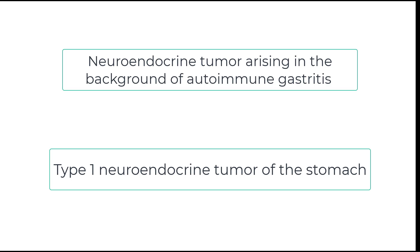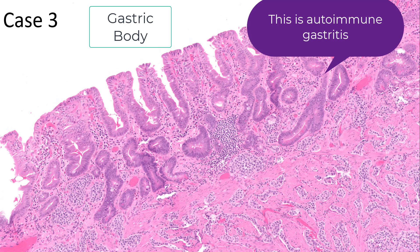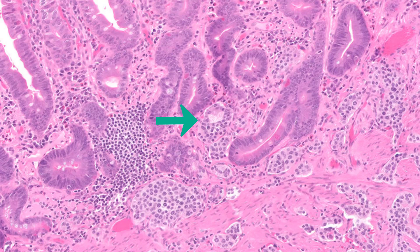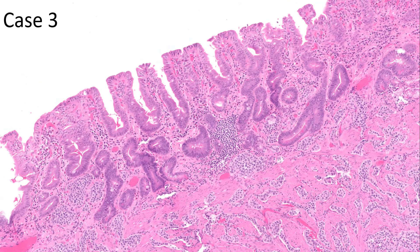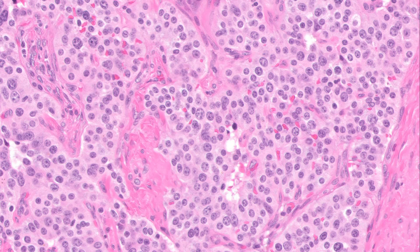Remember: type 1 neuroendocrine tumors are the best behaved of all neuroendocrine tumors in the stomach. Case 3 is a bigger piece of tissue from a gastrectomy specimen. There's complete atrophy — not a single parietal cell to be seen. This is the gastric body fundic mucosa. There's intestinal metaplasia, there's neuroendocrine cell hyperplasia, and perhaps deep down there's a neuroendocrine tumor. This is definitely a neuroendocrine tumor — it's forming nests, it's extremely monotonous. But type 1 neuroendocrine tumors of the stomach that develop in the background of autoimmune gastritis are very well behaved.